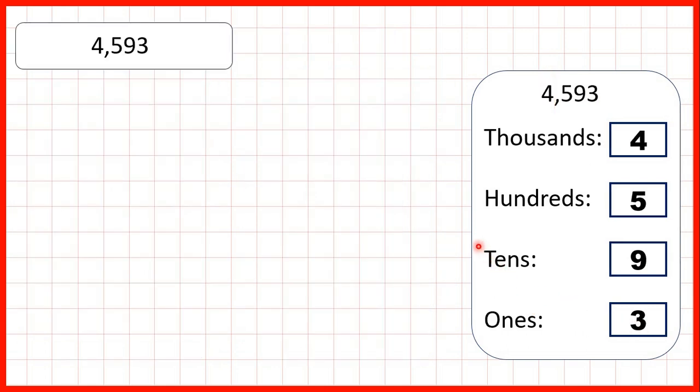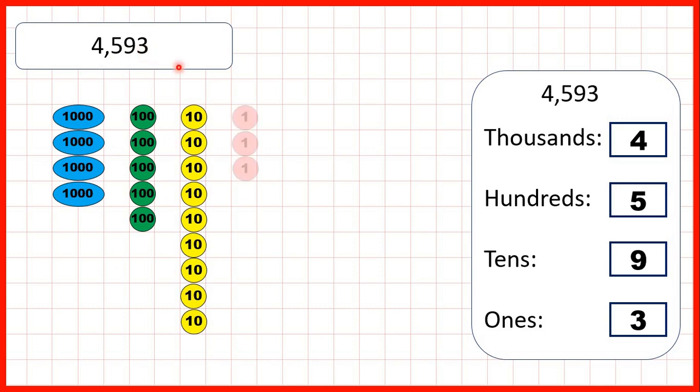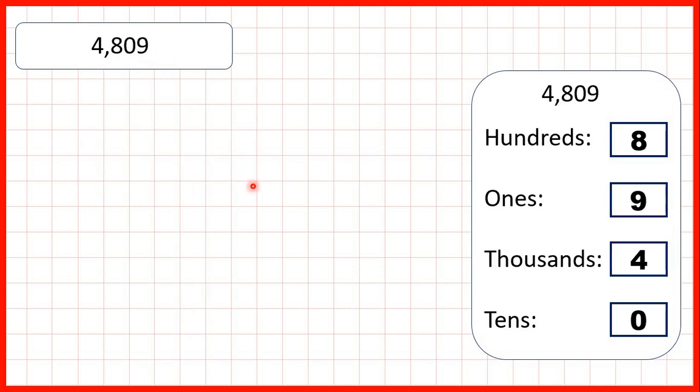Now, what we can do is use place value counters to represent numbers. So for 4,593, we can have 4,000 counters, five hundred counters, nine ten counters, and three one counters.